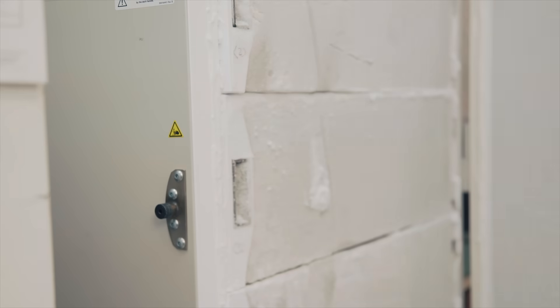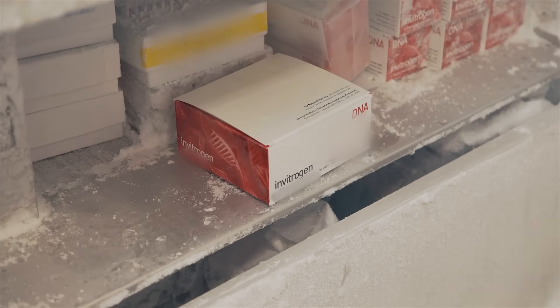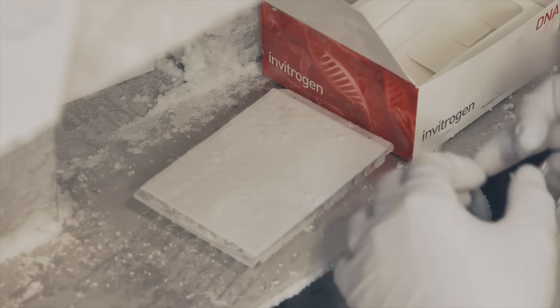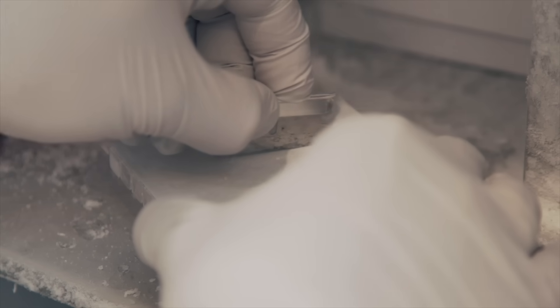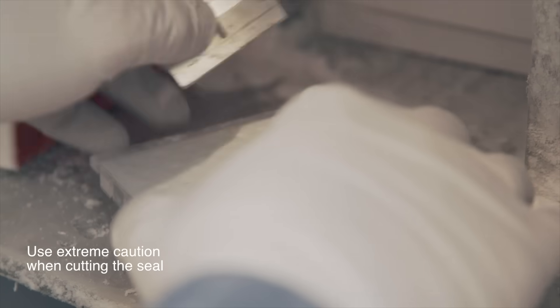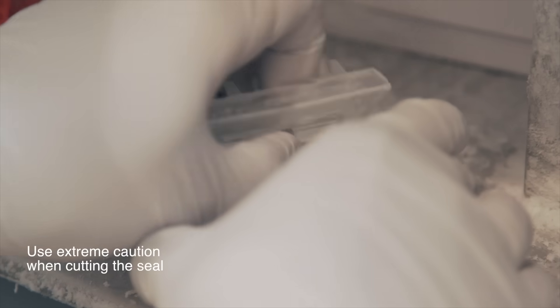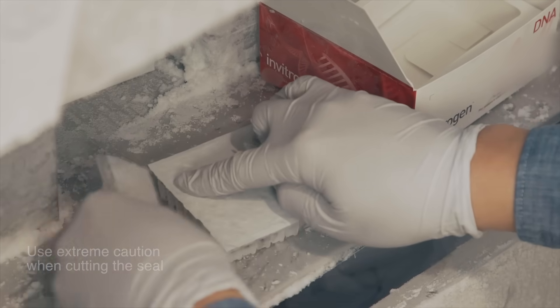Obtain the FlexPlate from your minus 80 degree freezer. While keeping your plate in the freezer, select the number of segments you would like to use for your experiment by scoring the heat seal with a razor blade. Snap off the columns.